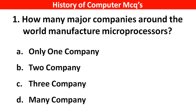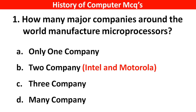Question number 1. How many major companies around the world manufacture microprocessors? Options A: 1 company, B: 2 companies, C: 3 companies, D: Many companies. Right answer is option B, 2 companies — that is Intel and Motorola.